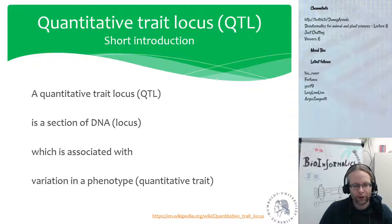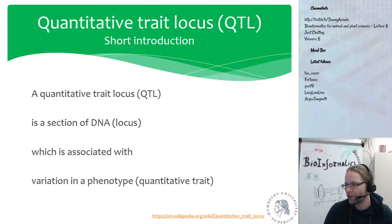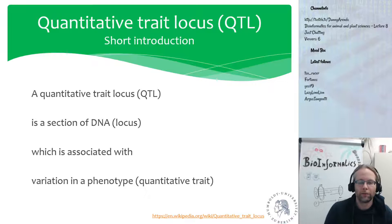This is more or less where we stopped last week. I talked a lot about quantitative trait locus mapping — standard QTL mapping. A QTL, a quantitative trait locus, is a section of the DNA called a locus which is associated with a variation in a phenotype. The phenotype here is always a quantitative trait, not a qualitative trait, because otherwise we would be using another type of mapping.